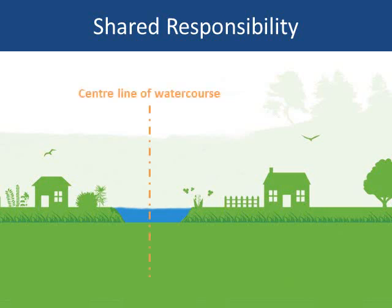Just to recap: if both banks of a watercourse run through or under your land, you're fully responsible for maintenance. If it runs adjacent to your land, including the other side of your fence or hedge, you're likely to be responsible for maintenance of the bank on your side to halfway across.